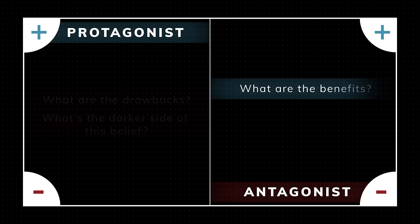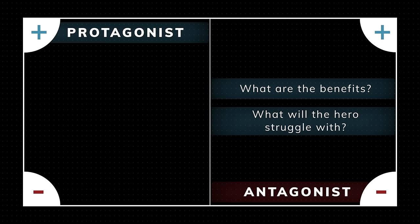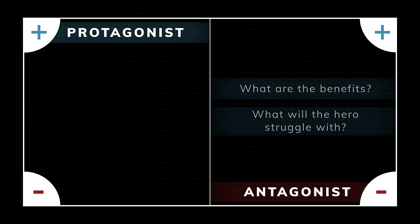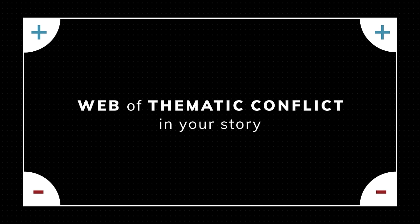Under viewpoint two: what are the benefits of your antagonist's belief? What are the good elements of this belief that your protagonist will have to deal with as they struggle to figure out what to do? When you fully fill this out, these characters create a web of thematic conflict in your story.